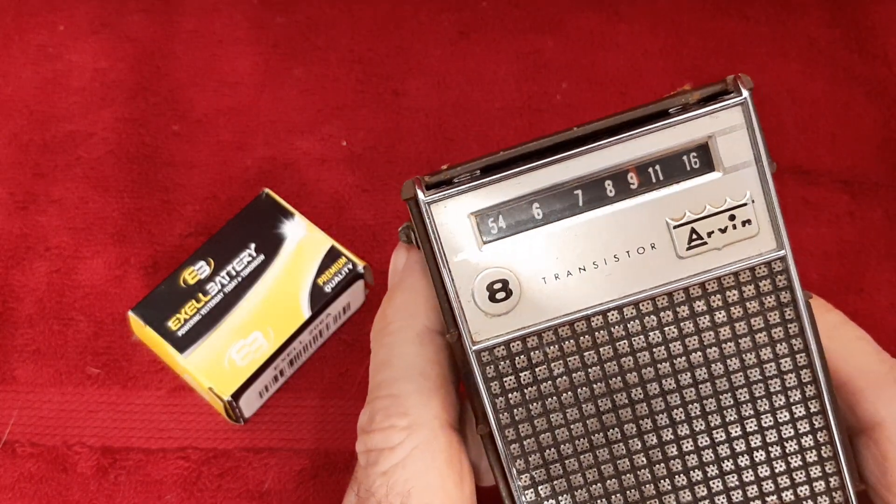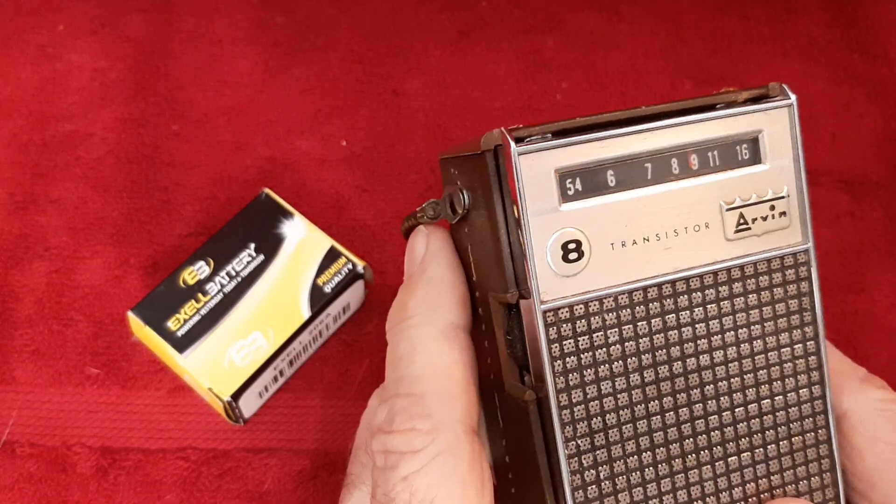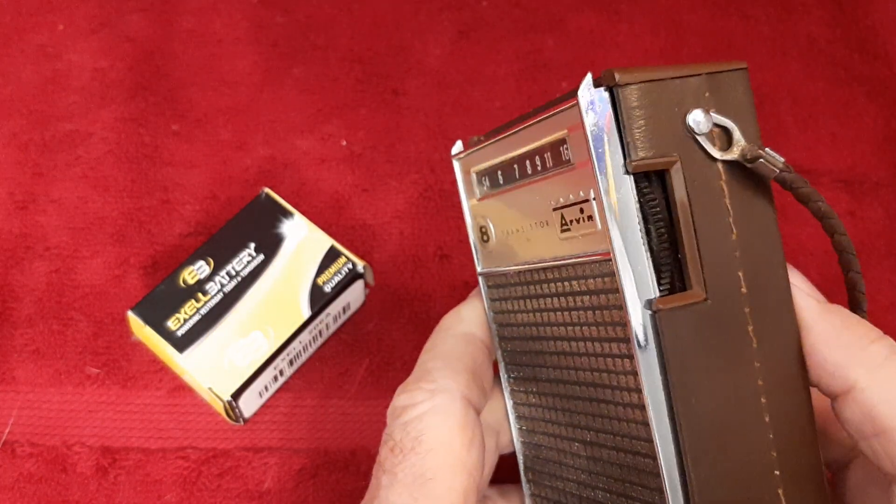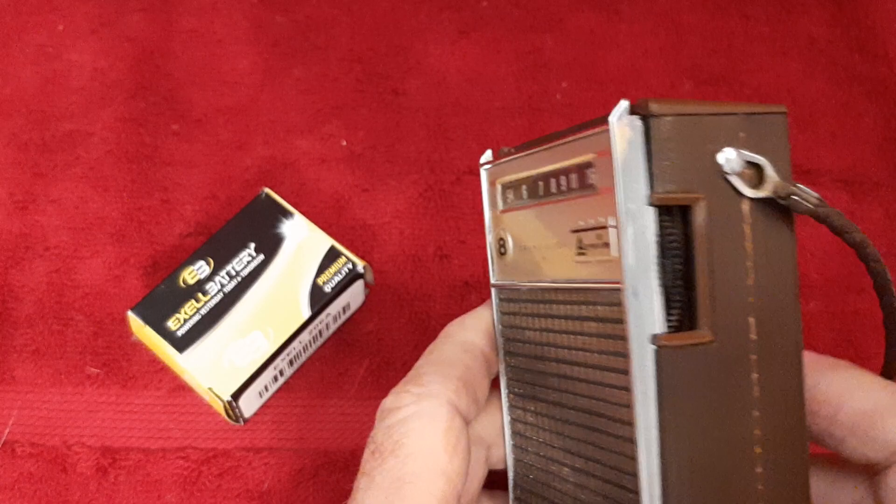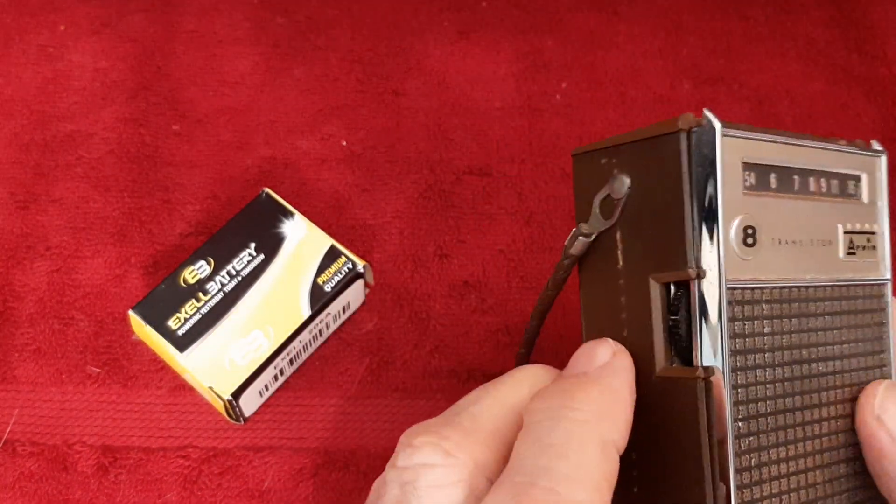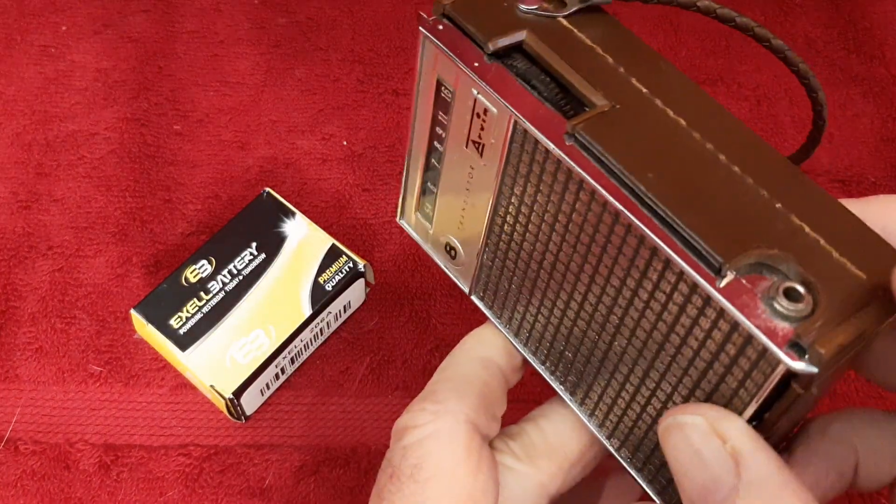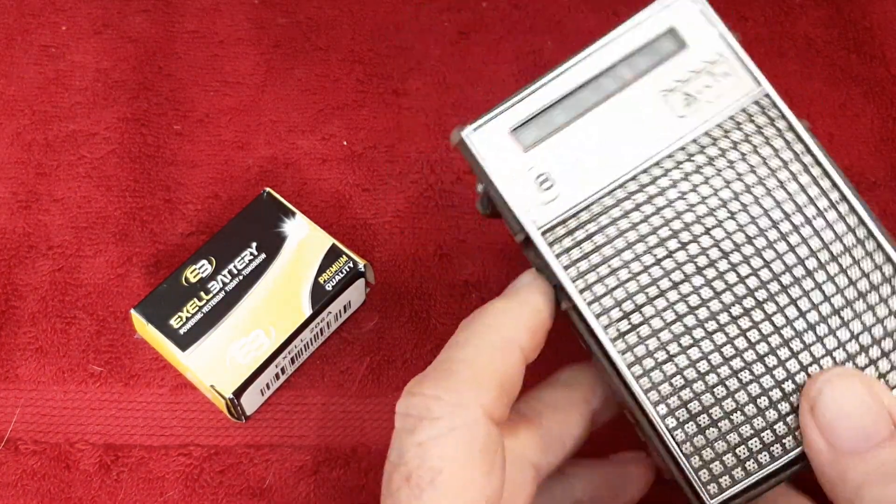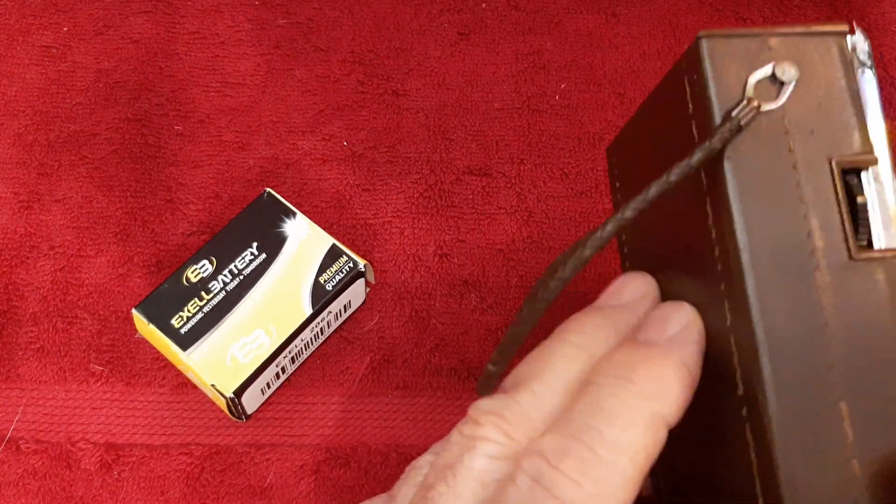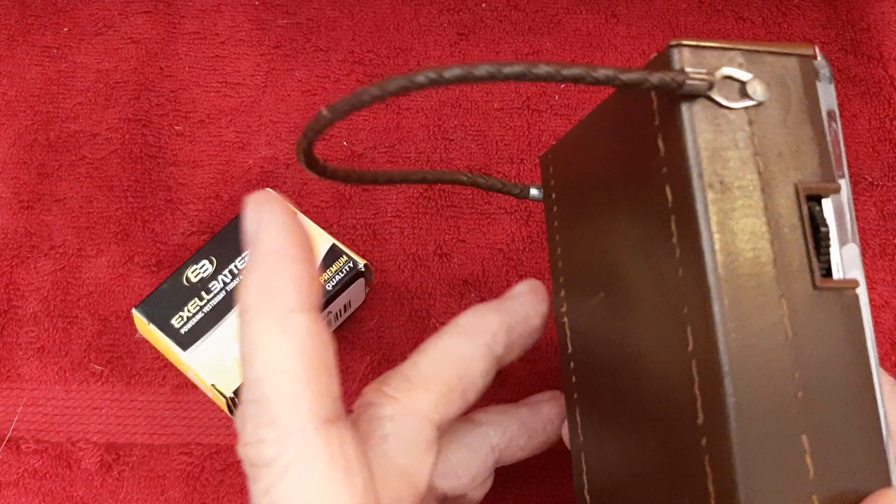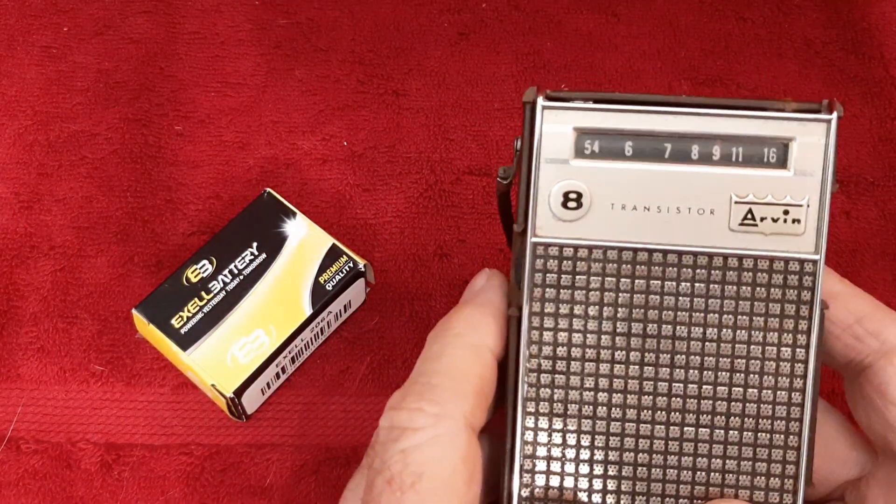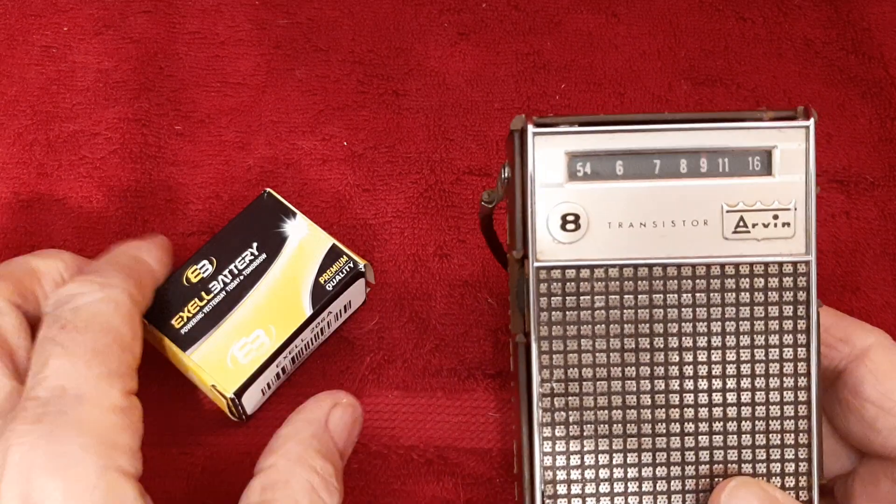This is an Arvin medium wave 8 transistor radio. It's very unique, pristine condition. There's the tuning knob, carrying strap, kind of unique. On-off volume, earbud jack, and it has a kind of built-in leather case, and I'll show you what I mean. Plus, it requires a very unique battery.